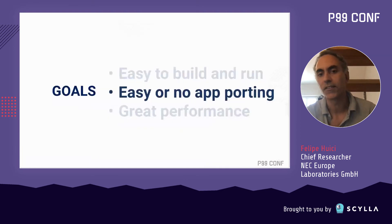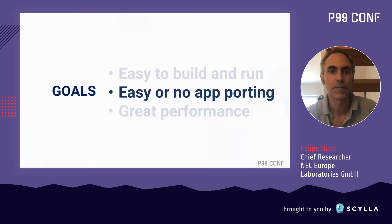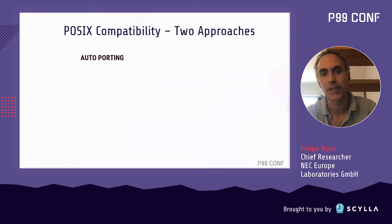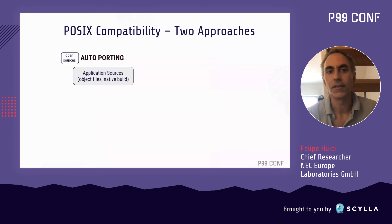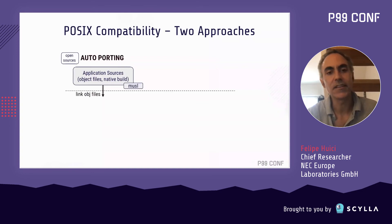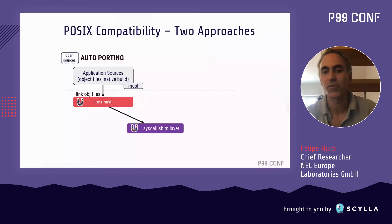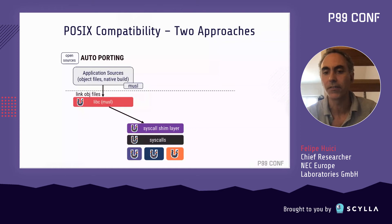The second goal is that there should ideally be no application porting to get standard applications running on Unicraft. This has to do with POSIX compatibility. We have two approaches. The first we call auto-porting: we assume the application sources are open, build with the application's native build system against the musl libc library, then link the resulting object files into the Unicraft build system. We have our own ported musl library. Musl expects syscalls, so we have a syscall shim layer that traps those, with our own implementations of the syscalls linking to all the Unicraft kernel modules.